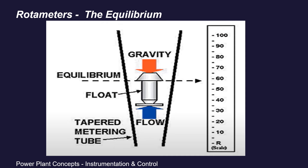The process reaches an equilibrium when the upward force — mainly the drag force — equals the weight of the float. This gives the float a fixed position with no movement. The height gained by the float as it moves is proportional to the rate at which the fluid is flowing. The height reading can be easily taken from the side scale marked on the tube, where the calibrated value of the flow rate corresponding to that float height is displayed.